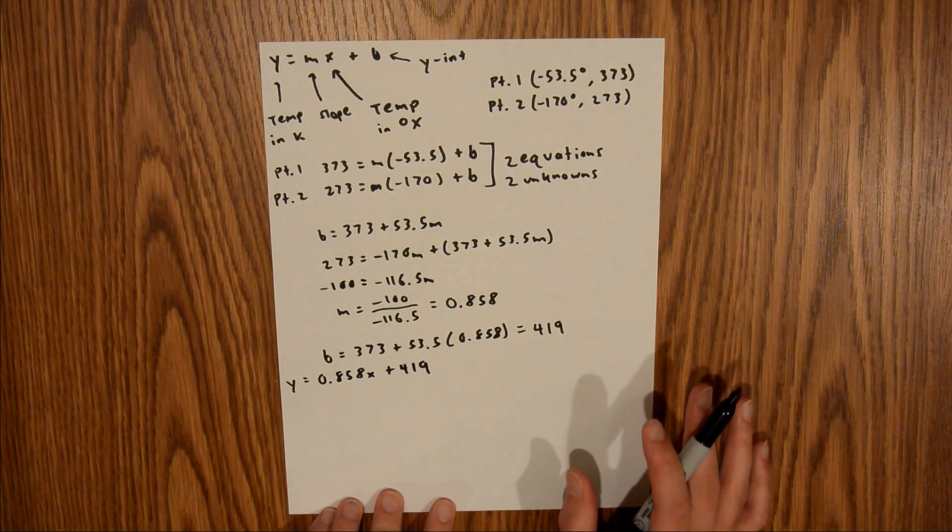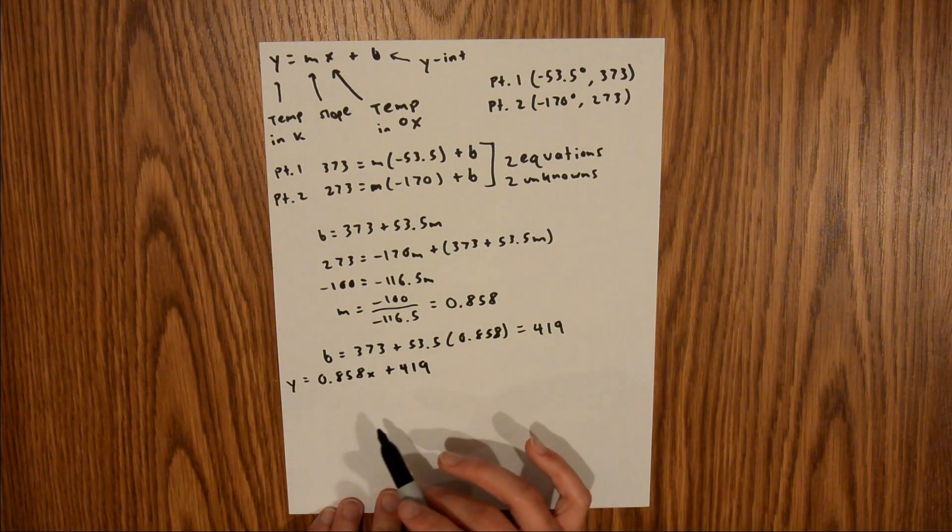Now, the problem asks me to convert 340K into degrees x. Using this equation now, we can plug in our value of 340K over here, and then solve for our value of x.